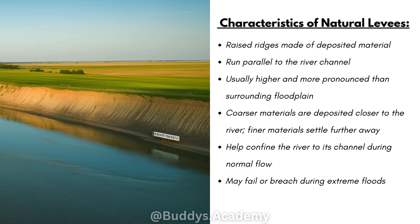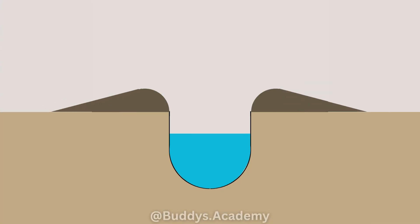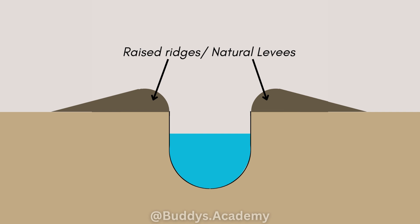Natural levees help confine the river to its channel during normal flow, but they may fail or breach during extreme floods. As you can see in the diagram, natural levees keep your river in its main channel. However, even though natural levees keep the river in its main channel, during extreme flooding the river can still breach these natural levees.